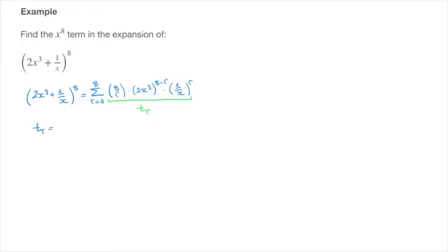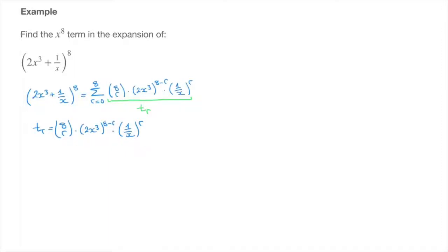So t_r equals the binomial coefficient 8r times 2x cubed, raised to the power of 8 minus r, times 1 over x raised to the power of r. Before finding the value of r at which this term corresponds to an x to the power of 8 term, we need to simplify this expression. In particular, we need to distribute the powers 8 minus r and r across the parentheses and simplify as much as possible.